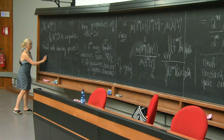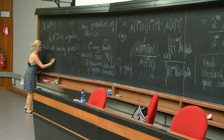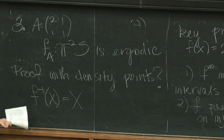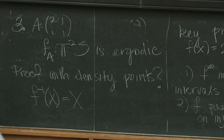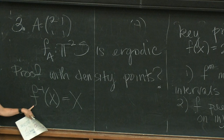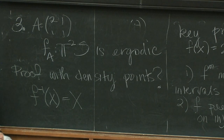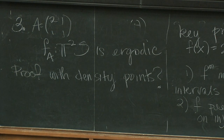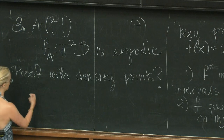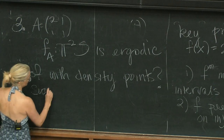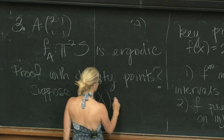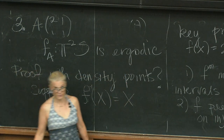I should have said f⁻¹(X) = X, because that's actually the assumption needed to prove ergodicity, not f(X) = X. But that's okay because f⁻¹(X) = X implies f(X) = X. So I should have made that the assumption.